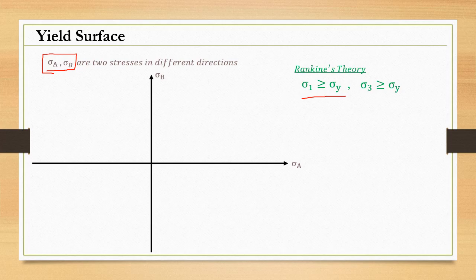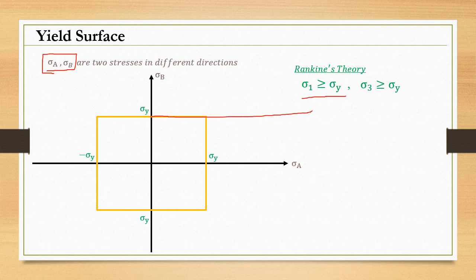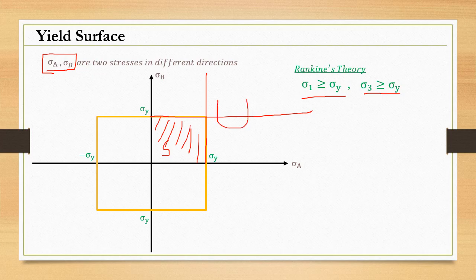Plotting Sigma_A versus Sigma_B: when Sigma_1 equals Sigma_Y, this gives one boundary line; similarly when Sigma_3 equals Sigma_Y, another boundary is plotted. The region enclosed by these boundaries is the safe design region. Any point outside this region represents an unsafe design. The Rankine yield surface forms a square shape on this plot.